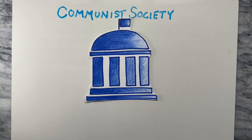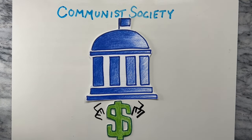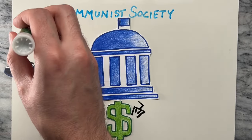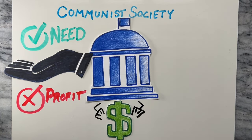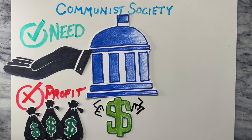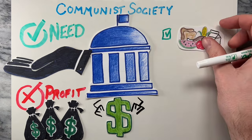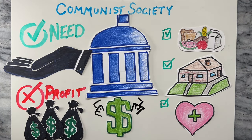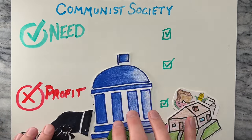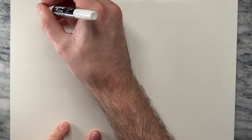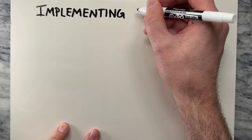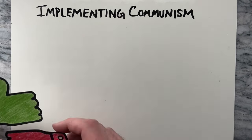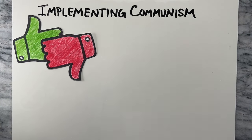In a communist society, the government controls all aspects of the economy and resources are distributed based on need rather than profit. This means that everyone has access to the basic necessities of life such as food, housing, and health care, regardless of their social status or wealth. However, the implementation of communist policies has been controversial and has often led to authoritarian regimes.